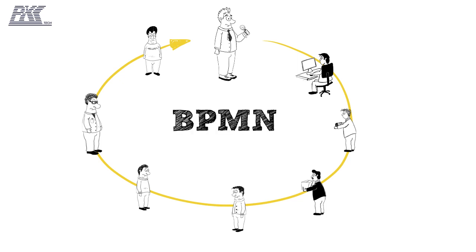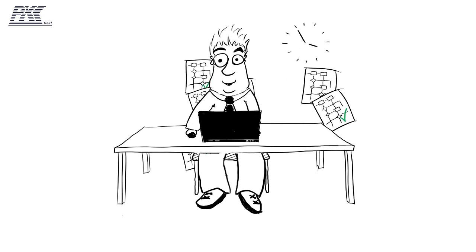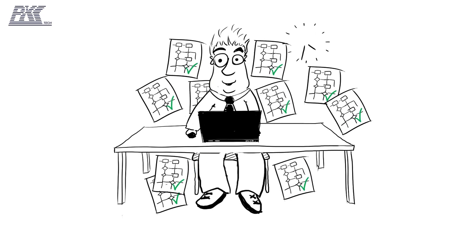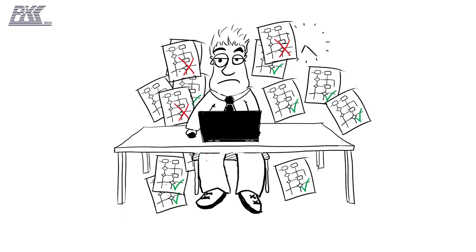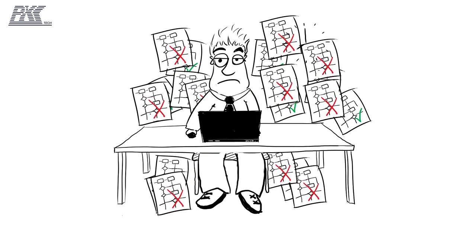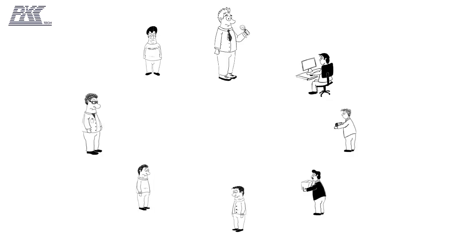There is one: BPMN, which uses a fixed set of objects and rules to visualise business processes. But drawing all these processes is time-consuming, and when dealing with complex ERP systems, mistakes are easily made. And that only leads to miscommunications.